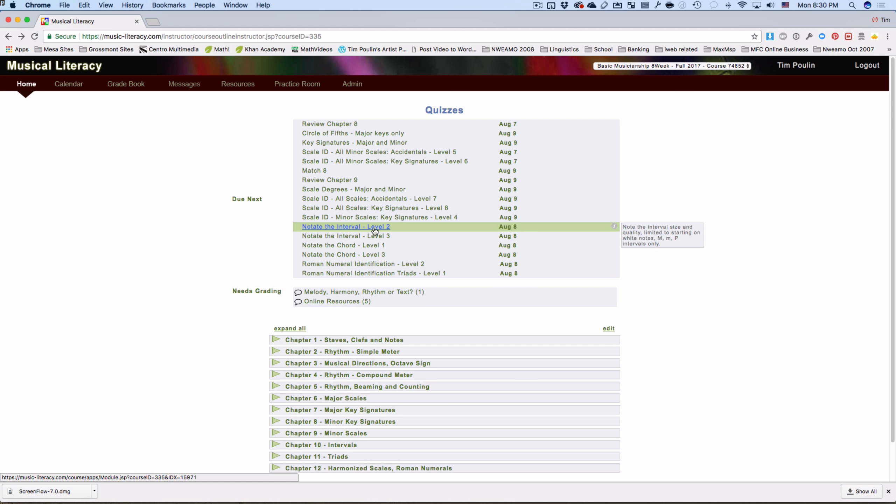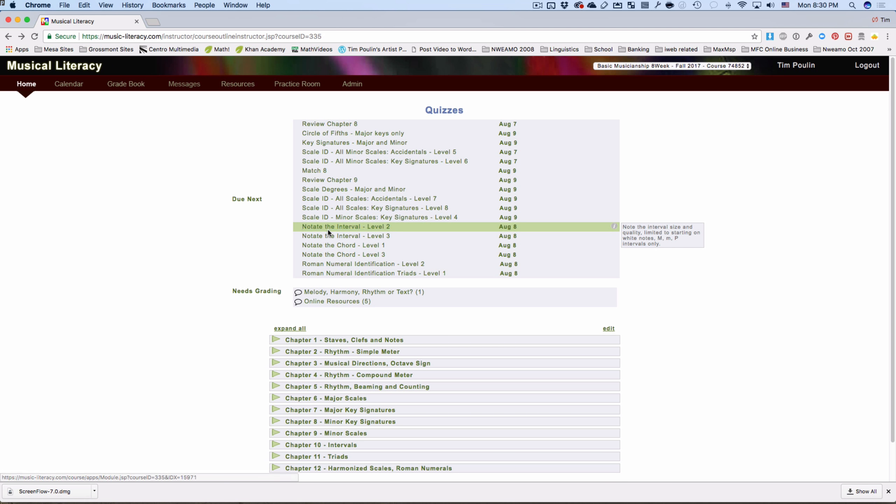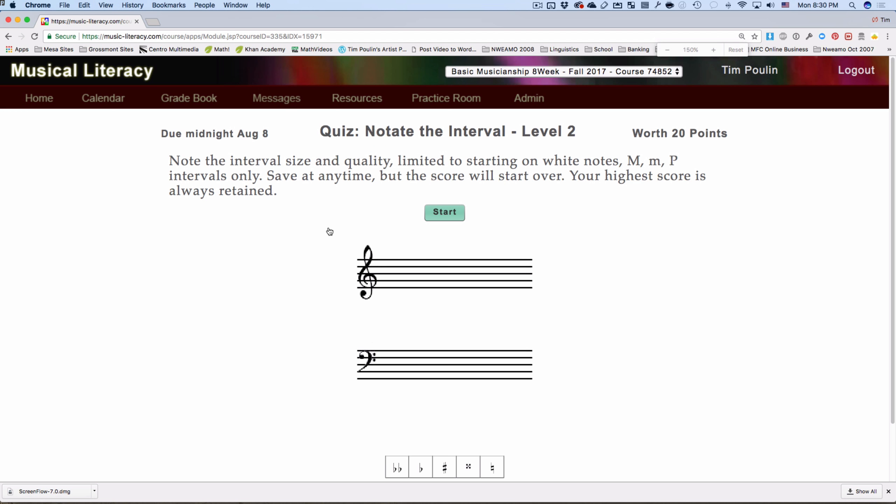So I'm going to do Notate the Intervals Level 2, and it might be small to look at on your screen, so it's not perfect, but you can go to View and Zoom In a few times. So I'm going to click it and see what I need to do. I'm going to hit Zoom In, shortcut. And it says there's going to be intervals on major, minor, perfect intervals on white keys only.